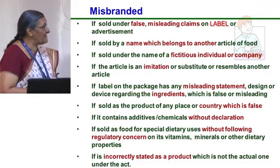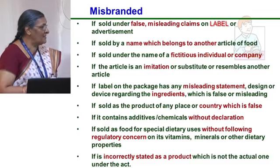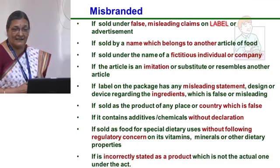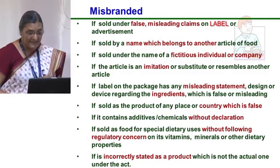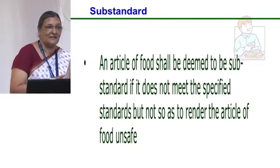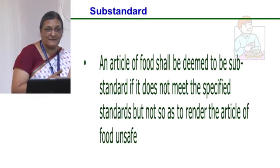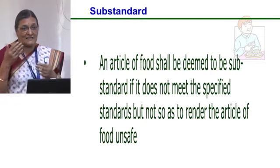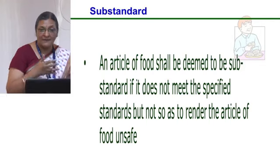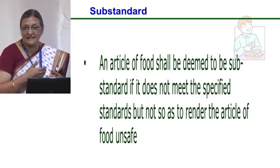Misbranded includes: false or misleading claims, names belonging to another article, fictitious individuals or companies, imitation, misleading statements, incorrect country of origin, and missing declarations. Substandard means the article does not meet the prescribed standard — for example, if protein is specified at 12% and you measure 10%, that is substandard. If moisture is specified at 15% and you measure 16–17%, that is both substandard and potentially unsafe as it may support microbial growth. Giving this opinion requires considerable time and careful judgement.